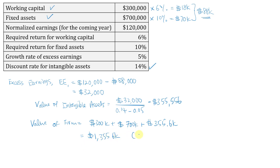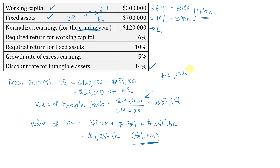That's how we value the firm using the excess earnings method. Be careful about whether the normalized earnings figure is for the year just ended or the coming year. If it's for the year just ended, those are earnings in year zero, so you must multiply by (1 + G) — that is, 32,000 × 1.05 — to get the year-one excess earnings before applying the formula. Always read carefully and check which period the earnings refer to.